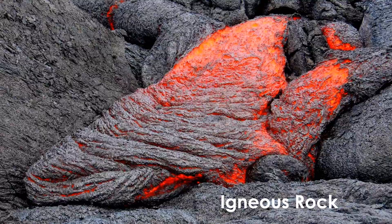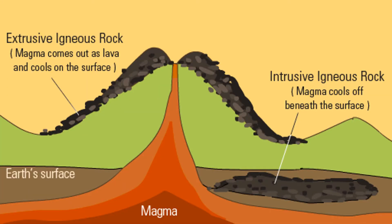Geologists distinguish between extrusive igneous rocks, which form when magma comes out as lava and cools on the surface, and intrusive igneous rocks, which form when magma cools beneath the surface. Intrusive igneous rocks occur inside other igneous rocks, and they also occur inside sedimentary and metamorphic rocks.